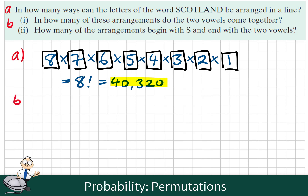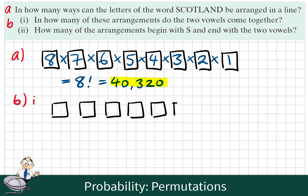In part B1, in how many of these arrangements do the two vowels come together? An effective strategy here is to treat the two vowels as if they were a single letter first, and then we'll consider both ways we could arrange them. So this time, we're going to create 7 tiles, one for each of the letters, including this single double vowel letter, if you could imagine it.